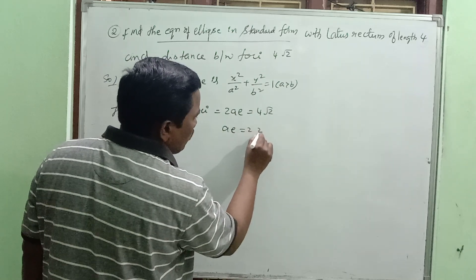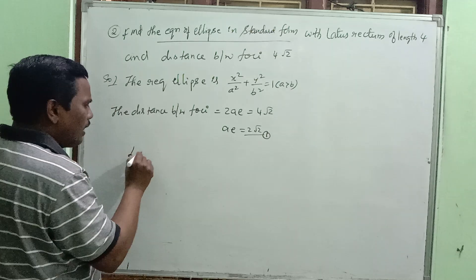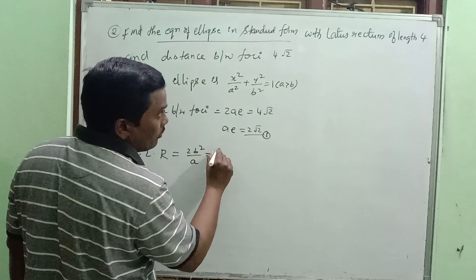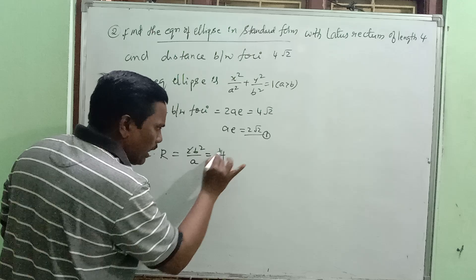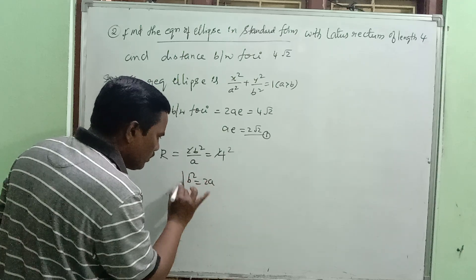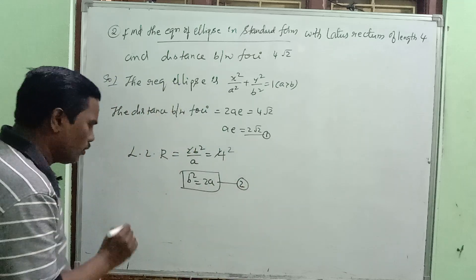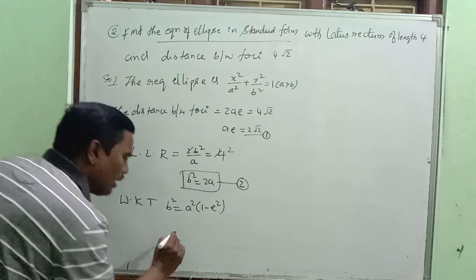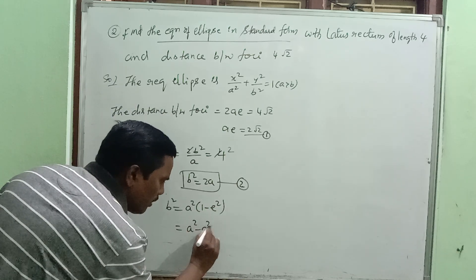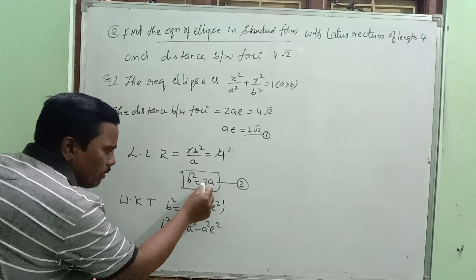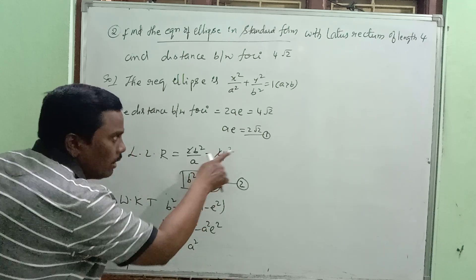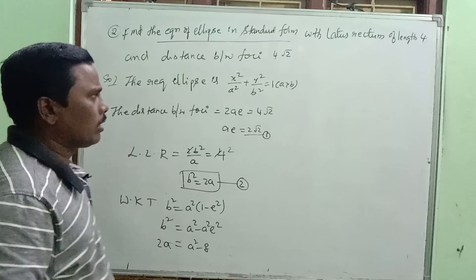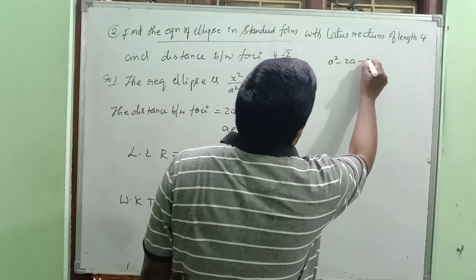Length of latus rectum = 2b²/a = 4, so b² = 2a. Using b² = a²(1 - e²) = a² - a²e². Substituting ae = 2√2, so a²e² = 8. Therefore 2a = a² - 8, giving a² - 2a - 8 = 0.